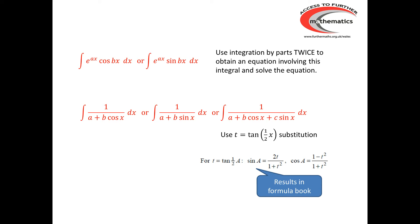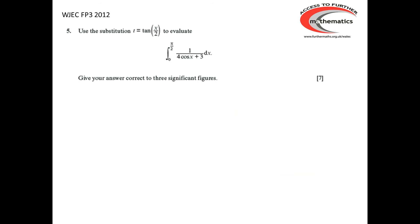Integrals like e to the ax cos bx or e to the ax sin bx need to be handled by using integration by parts twice. In those cases it appears as if you're going around in a circle — in fact, what you are obtaining is an equation which can be solved to find the integral. For integrals like 1 over a plus b cos x, or 1 over a plus b sin x, or 1 over a plus b cos x plus c sin x, the t equals tan(½x) substitution from FP2 is very useful, as we will see in the first example from the 2012 paper.